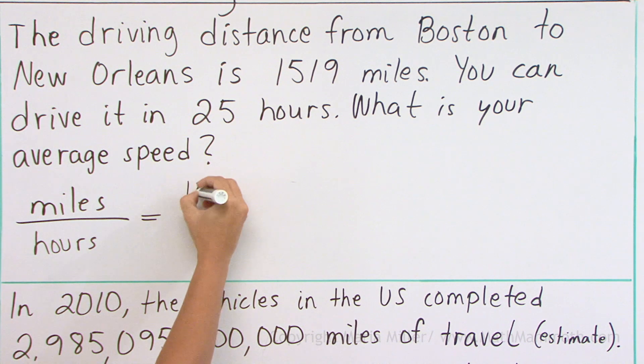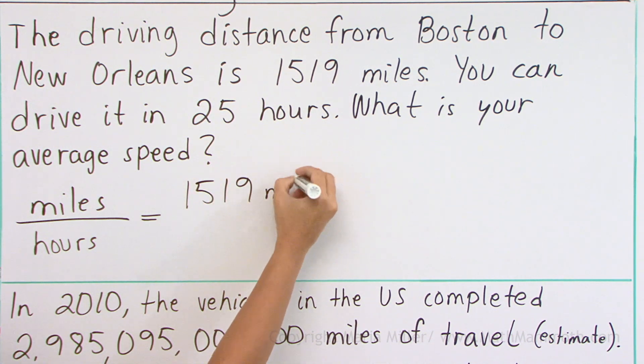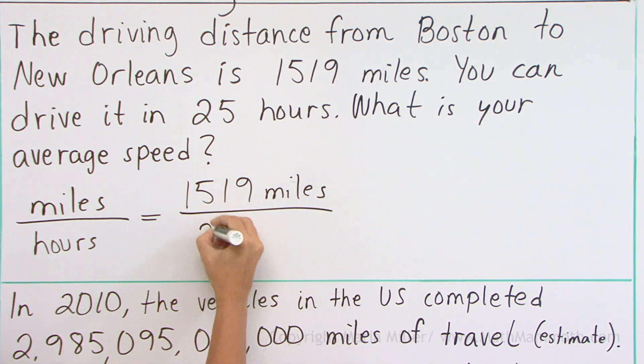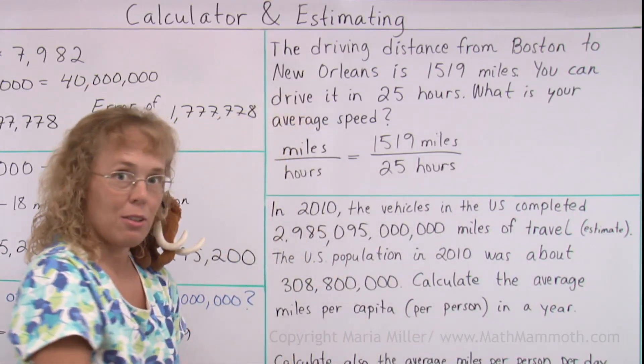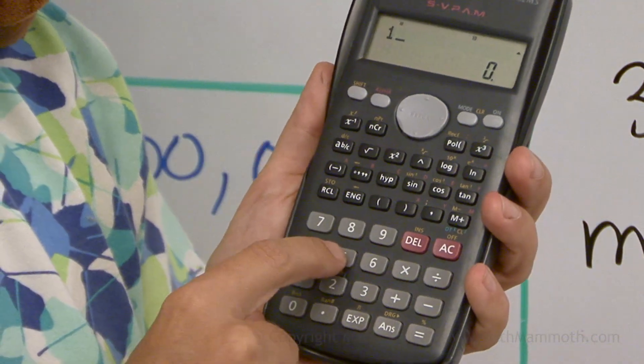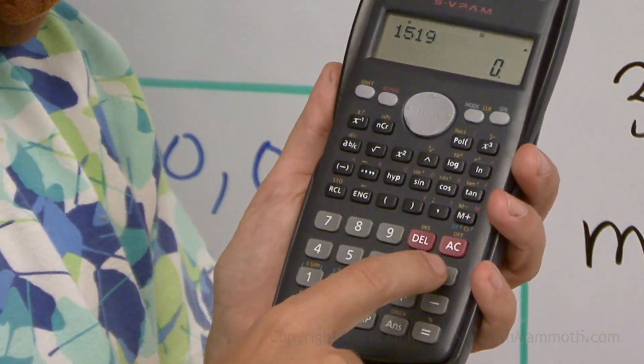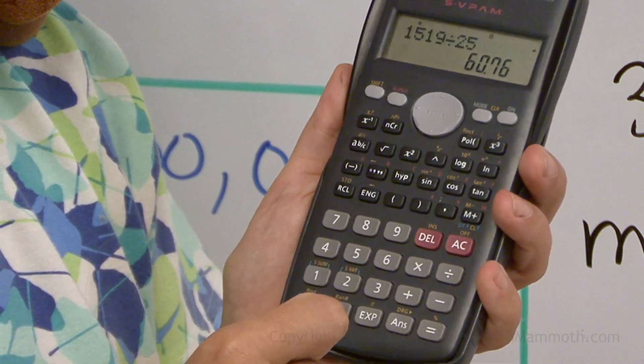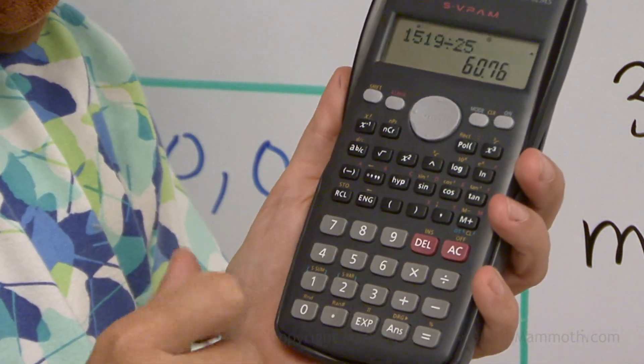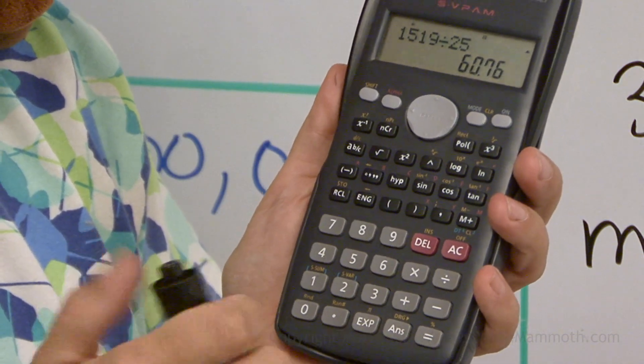And so all we need to do is take the miles here, divide them by hours, and let's see what my calculator tells me about that. 1519 divided by 25.